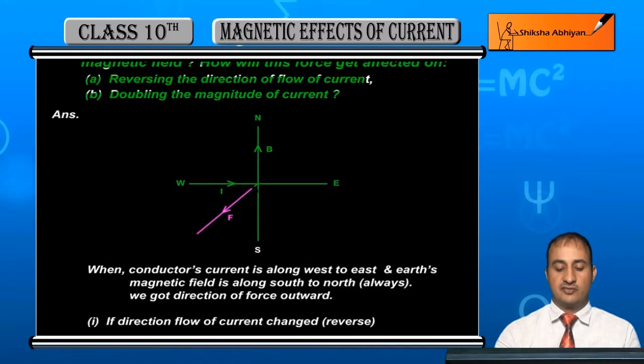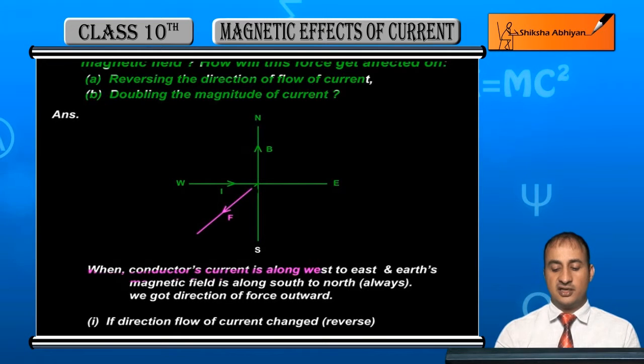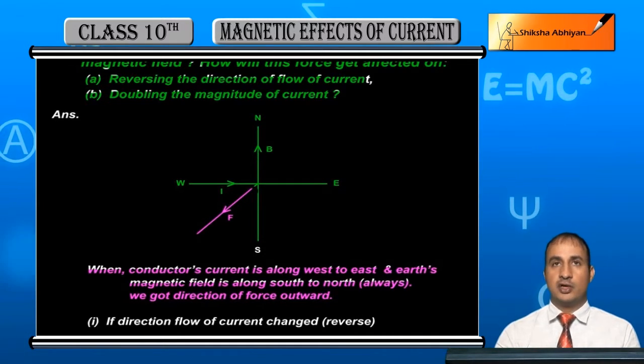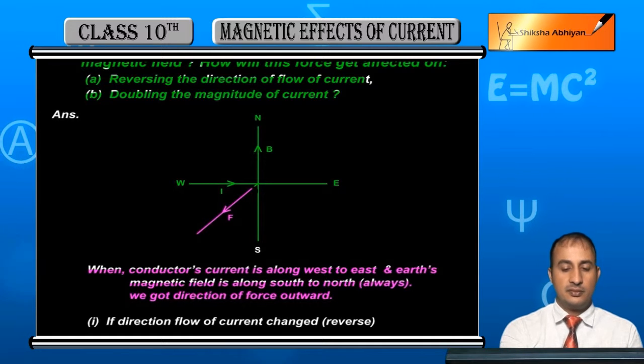When conductor's current is along west to east and Earth's magnetic field is always south to north, we get the direction of force outward.